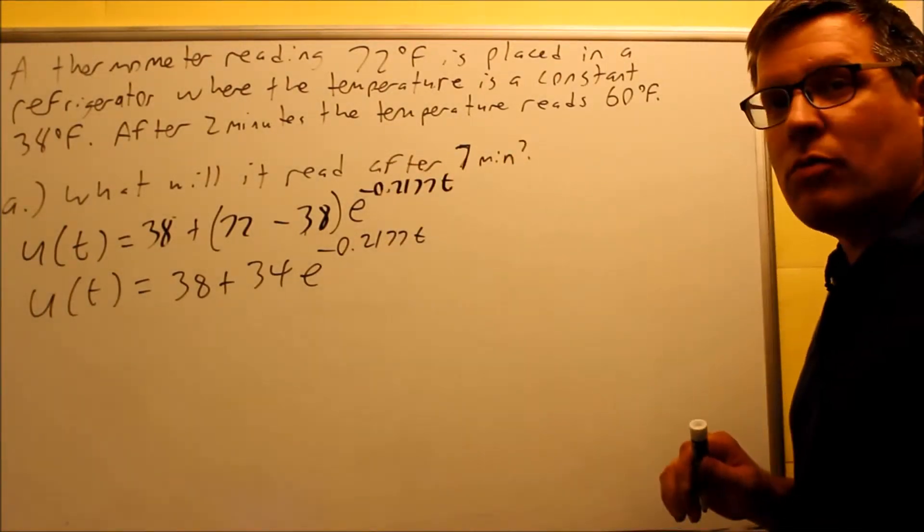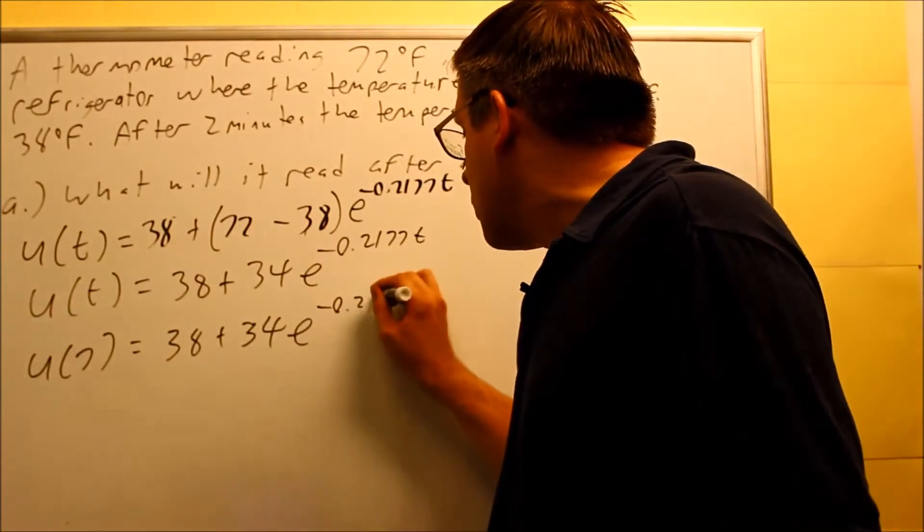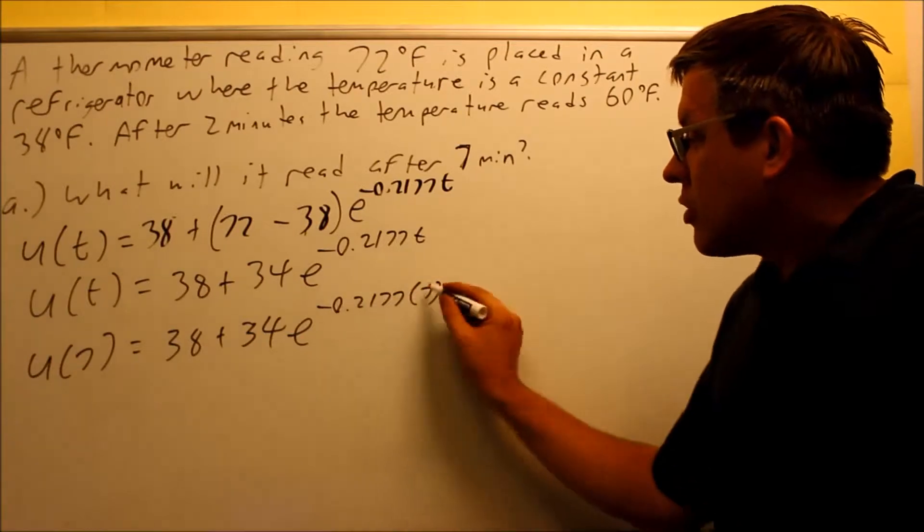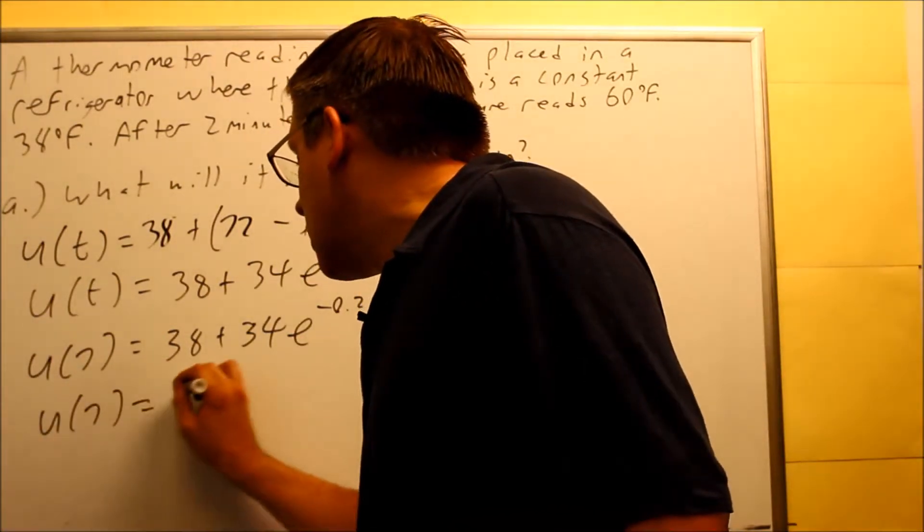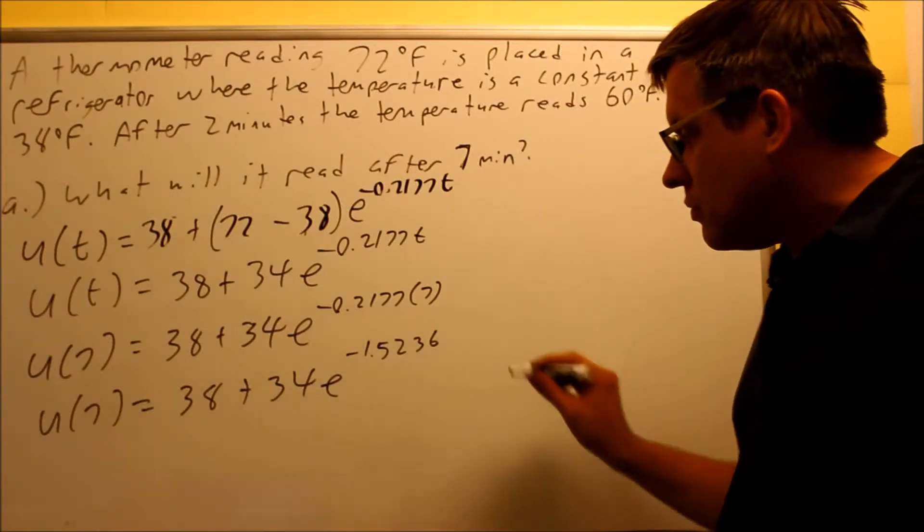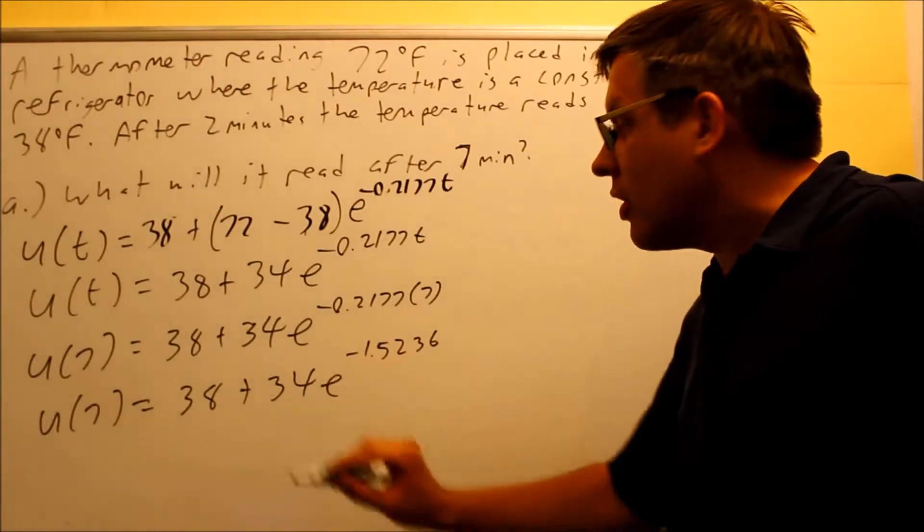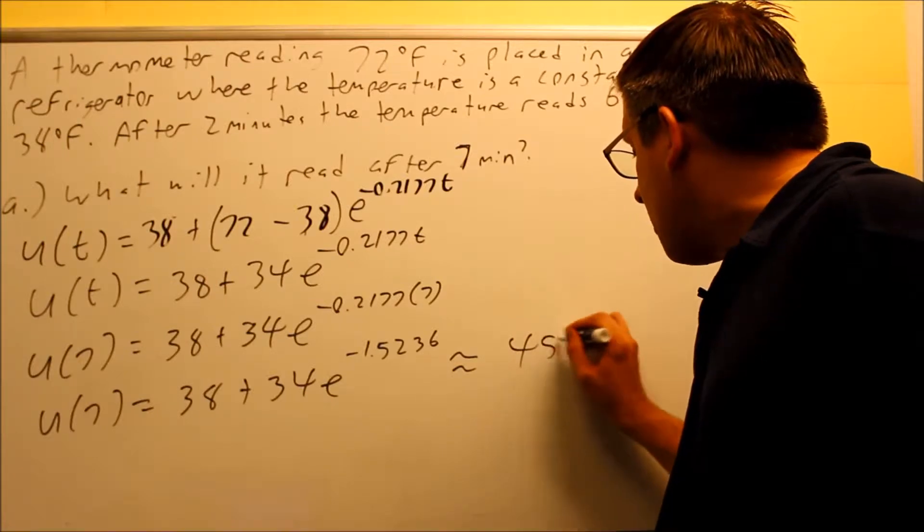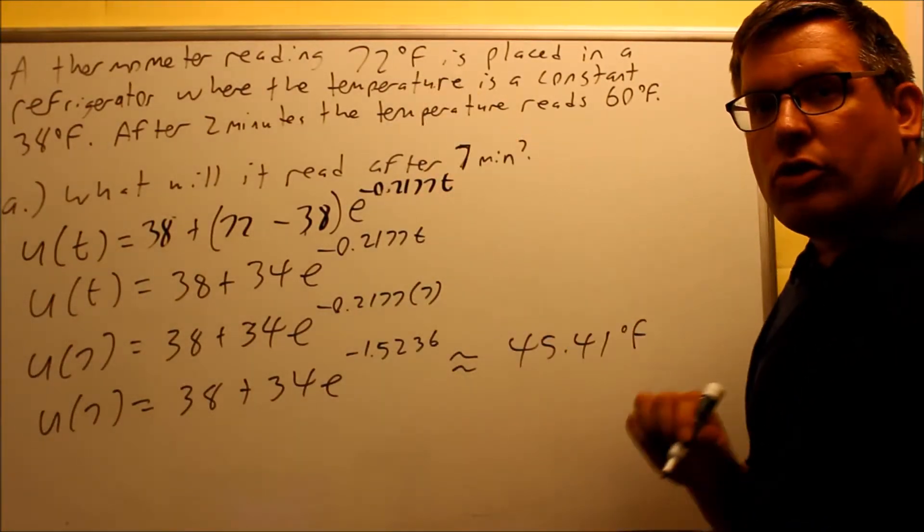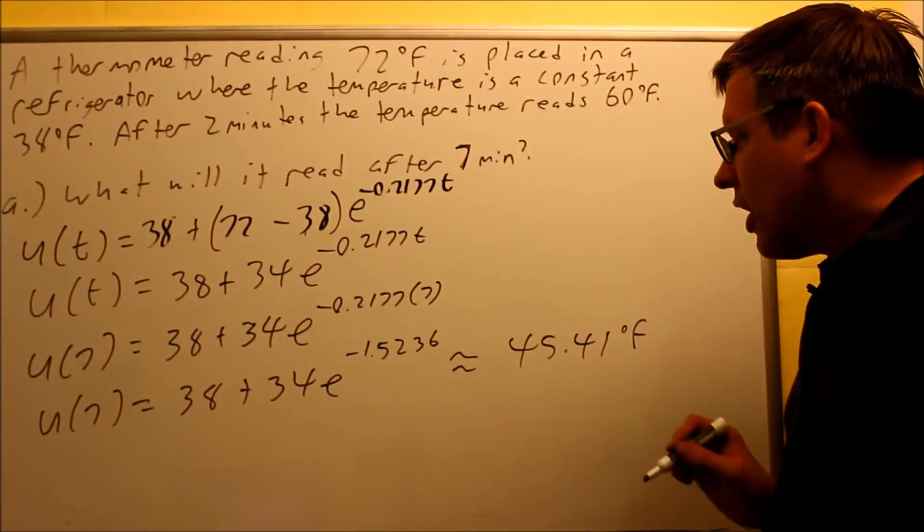We want to find out what it reads after 7 minutes, so we're going to put 7 in for time. u(7) = 38 + 34e^(-0.2177×7). Multiply the exponent part out first, you get -1.5236. Put this whole part in your calculator and you should get about 45 degrees. That makes sense because it will cool. It was 72 when you put it in there, and after seven minutes the thermometer temperature will drop to about 45 degrees according to Newton's Law of Cooling.